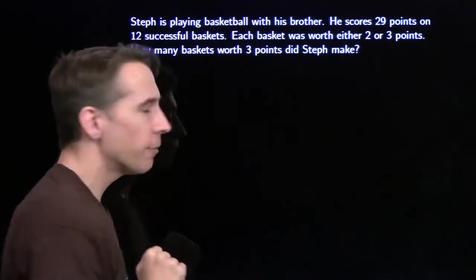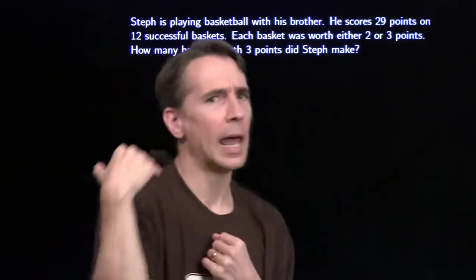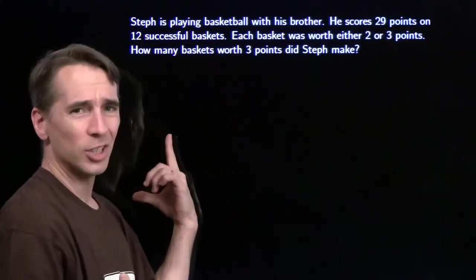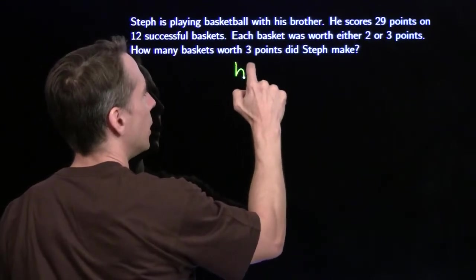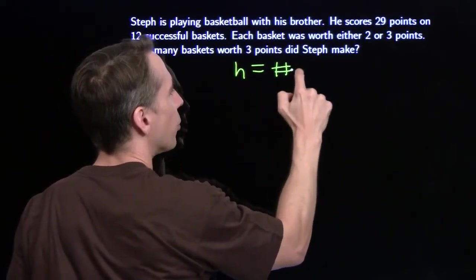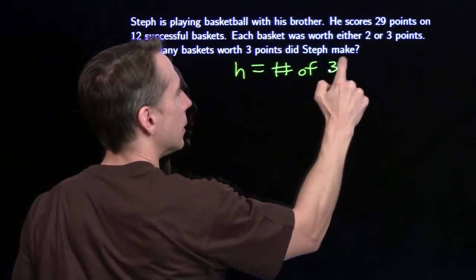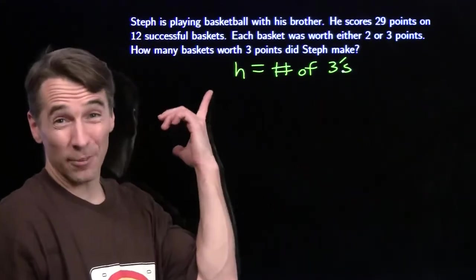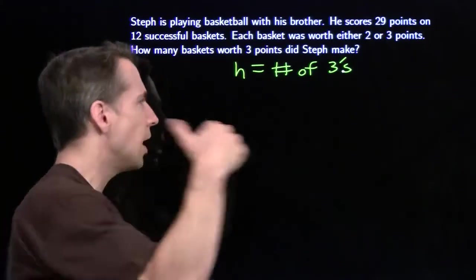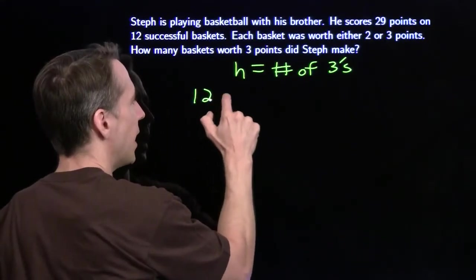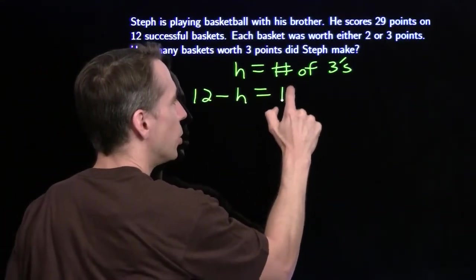We're looking for the number of three pointers Steph made, so we need a variable for that. We're not going to choose t, because t could stand for two or for three, I'm going to choose h. h is the number of threes. Now, Steph dropped in h threes, he made 12 baskets total. That means the other 12 minus h must have been twos.